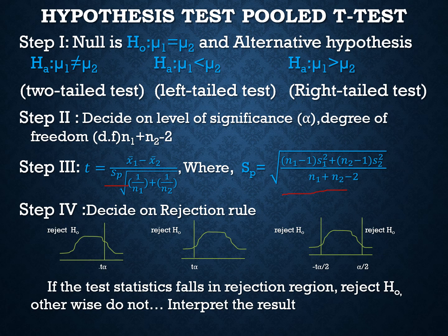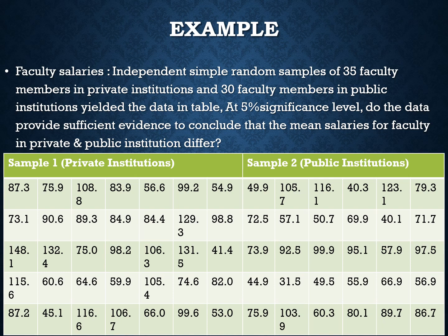We then decide on the rejection rule, which is the same as learned in previous lectures: if the test statistic falls in the rejection region, reject H0; otherwise do not reject H0, and interpret the result. Now we are going to do an example.